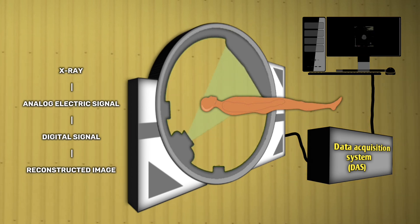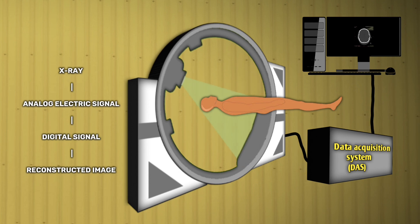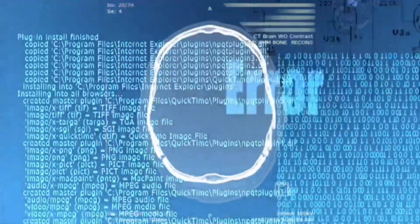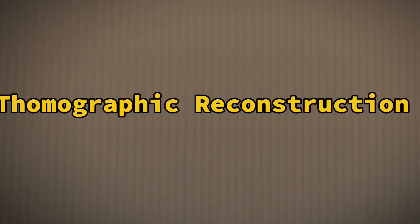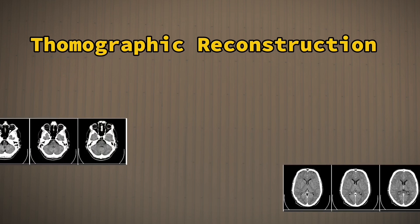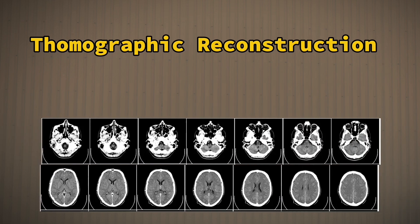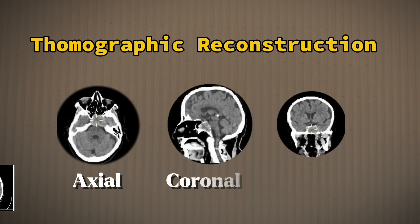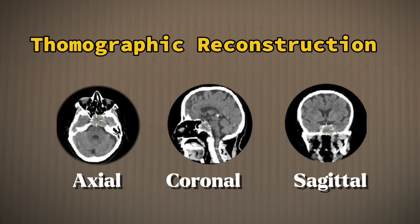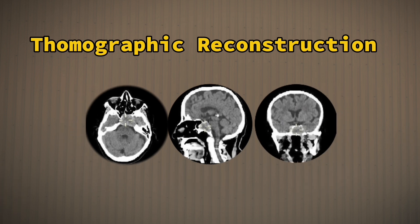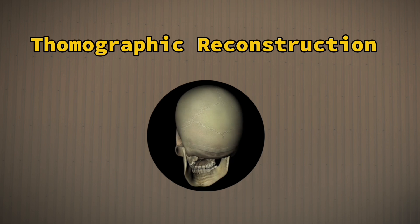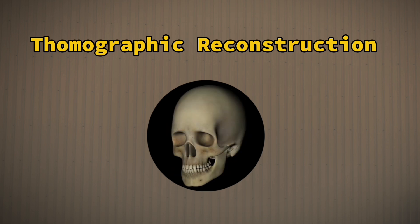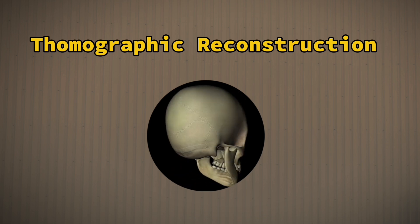The digital data from the DAS is then used by the computer to reconstruct the CT image based on the attenuation information gathered at different angles. The real magic happens in the computer using a mathematical process called tomographic reconstruction. The computer combines all the individual x-ray images to create cross-sectional slices of your body, which can be stacked together to form a 3D model, allowing doctors to examine your body layer by layer.